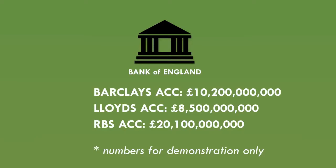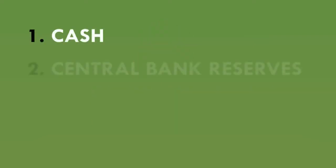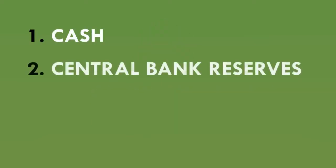Remember that name because we'll be using it a lot in this video. Central bank reserves are effectively an electronic version of cash, and banks use these to make payments to each other. The central bank reserves are created by the Bank of England, and they can only be stored in accounts that the big banks have with the Bank of England. To get one of these bank accounts at the Bank of England, you have to be a bank. So as members of the public, we can't get our hands on any central bank reserves — we just have to use physical cash. The first two types of money are: one, cash; and two, central bank reserves.